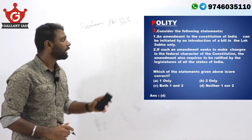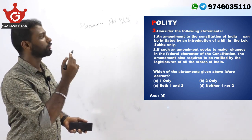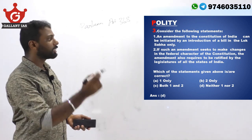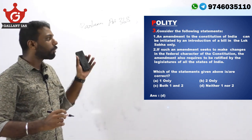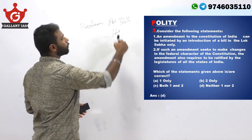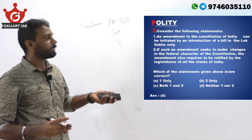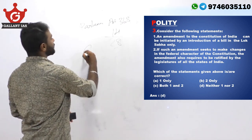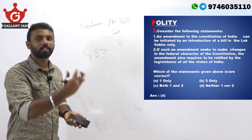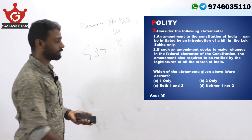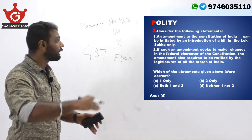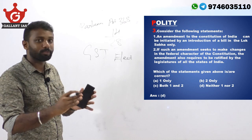So statement one can be eliminated. Moving on to statement two: if an amendment seeks to change the federal character of the constitution, ratification by all states is required. Note the word 'all' — that is an extreme statement. Actually, only half the states is required. With 28 states currently, ratification of 14 states is necessary for an amendment affecting the federal character. The best example is GST — goods and services tax — because it alters the financial relations between the centre and state. Similarly, regarding the election of the president, ratification from at least half of the states is necessary.